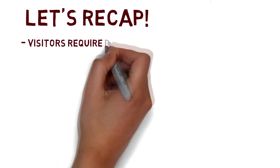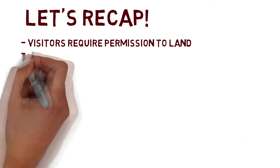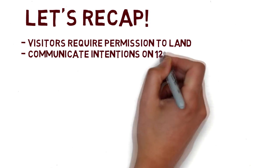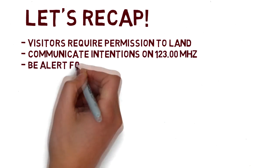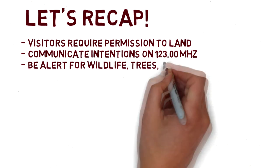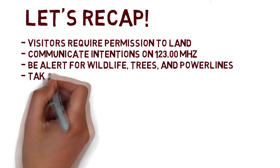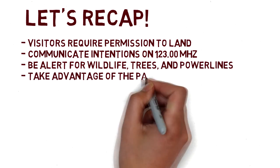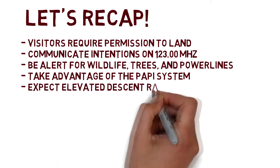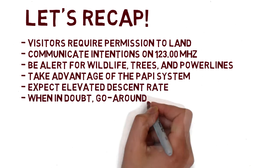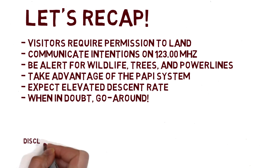Okay, so let's recap. Visitors require permission to land. Communicate your intentions on 123 MHz using standard untowered procedures. Be alert for wildlife, trees, and power lines. Take advantage of the PAPI system. Expect an elevated rate of descent, especially for runway 5. And as always, when in doubt, go around.